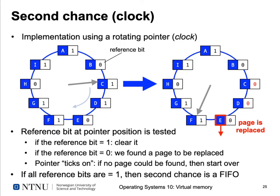Here's a graphical visualization of second chance. Pages are arranged in a linked list — or on a circle — which is why it's also called the clock algorithm: a pointer or clock hand goes around the circle checking each page's state. Whenever a page replacement is needed, the algorithm checks the reference bit of the current page. If it's one, it resets it to zero and advances to the next page. It continues until it finds a page with reference bit zero — such as page E — and replaces that page.